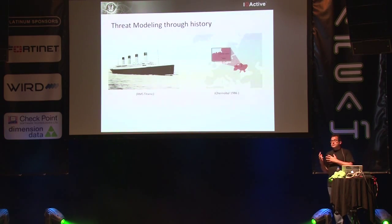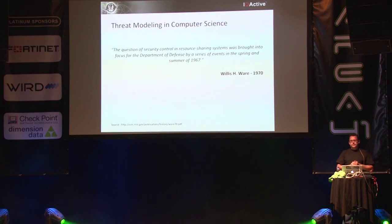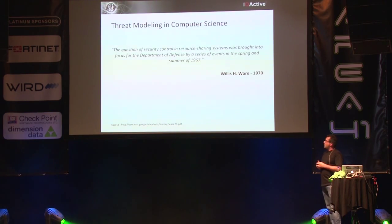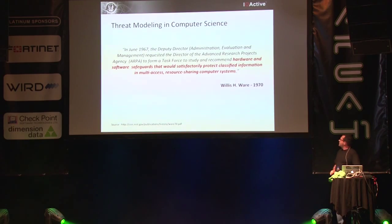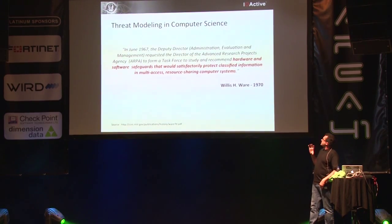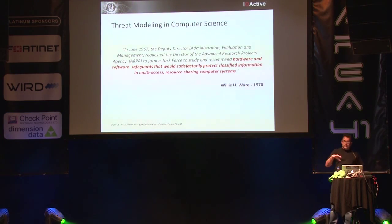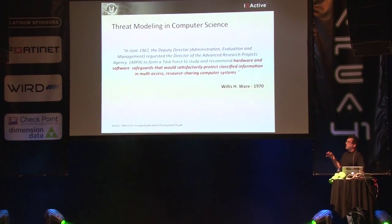This made me think: how can we build systems better to make them more secure and think about all the things that can go wrong? Is everybody familiar with the WARE report? This is a report written in 1970, mandated in 1967. It was supposed to recommend hardware and software safeguards to protect classified information in multi-access resource-sharing computer systems — which is exactly what we're trying to do today, more than 40 years later.